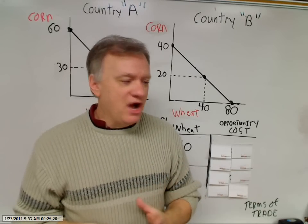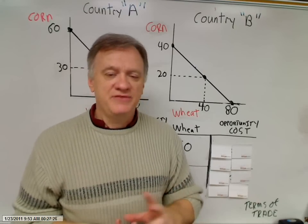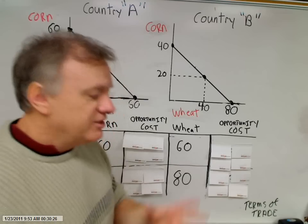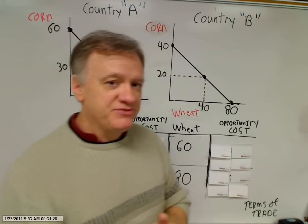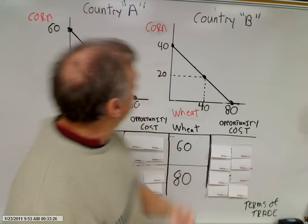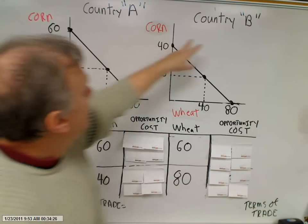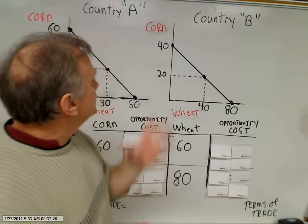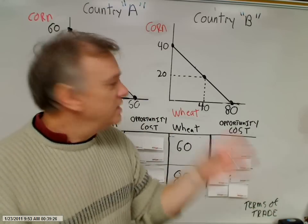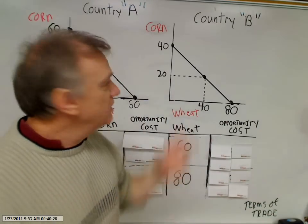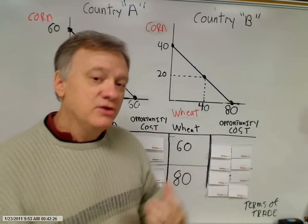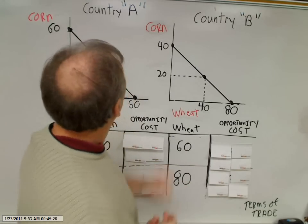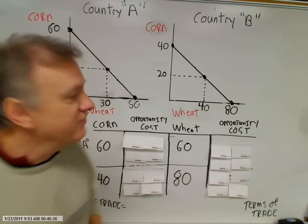What we're going to look at now is a variation of the production possibilities frontier. We're going to look at the production possibilities frontier for two countries, country A and country B. We're going to keep it simple and assume that they can only produce two commodities — corn and wheat — with their resource endowments: land, labor, capital, and entrepreneurship. Let's look at country A first.